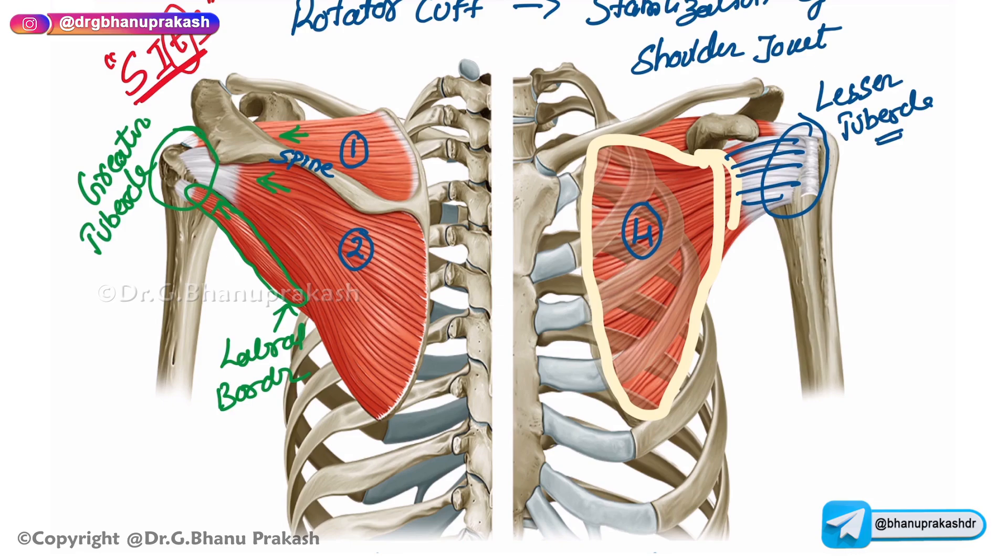That covers the four muscles of the rotator cuff along with their origin, insertion, nerve supply, and actions. In the next video, we will discuss the rotator cuff tears.